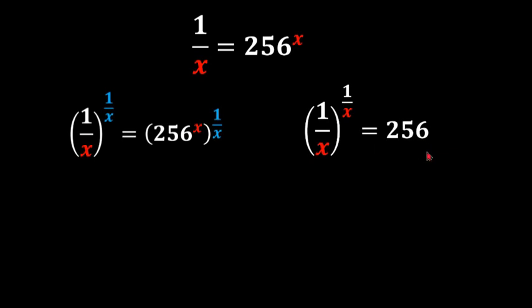Now what we need to recognize is that 256 can be rewritten as 4 to the power of 4. And once we have done that, since our base and our exponent are the same on both sides, we can just set our bases equal to each other. So in this case we would have 1 over x is equal to 4.